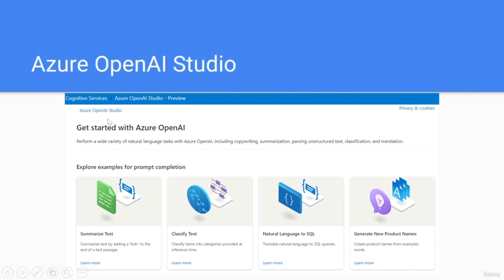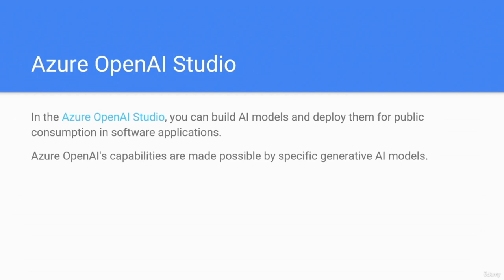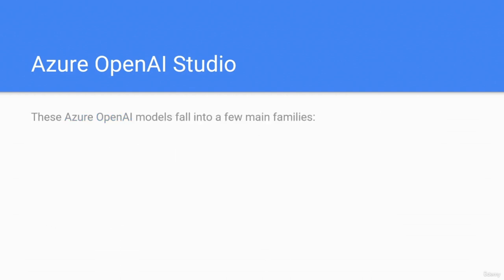Here is an image of the OpenAI Studio — this is shown as a preview. In the Azure OpenAI Studio, you can build AI models and deploy them for public consumption in software applications. Azure OpenAI's capabilities are made possible by specific generative AI models. Different models are optimized for different tasks — some excel at summarization and providing general structured responses, while others are built to generate code or unique images from text input.